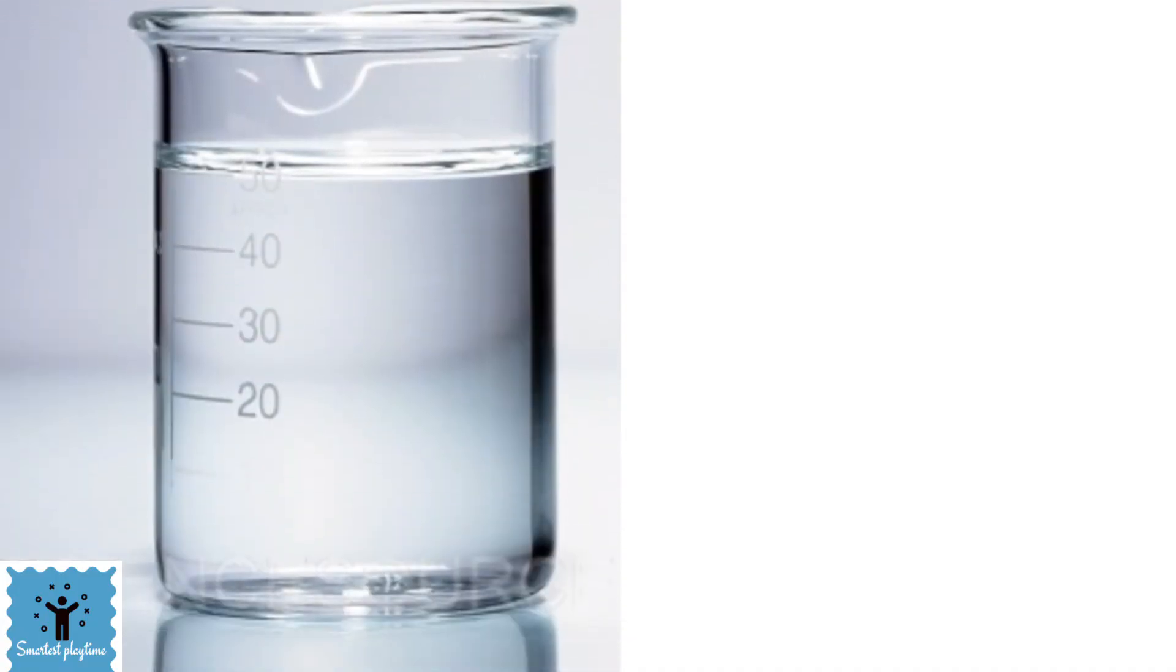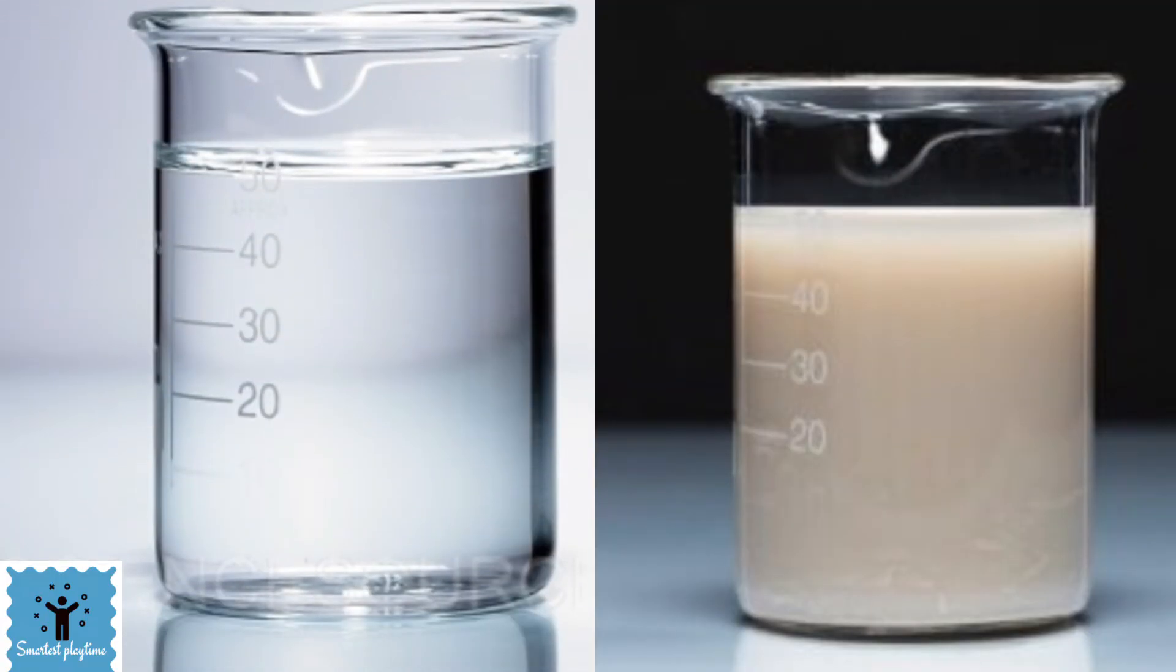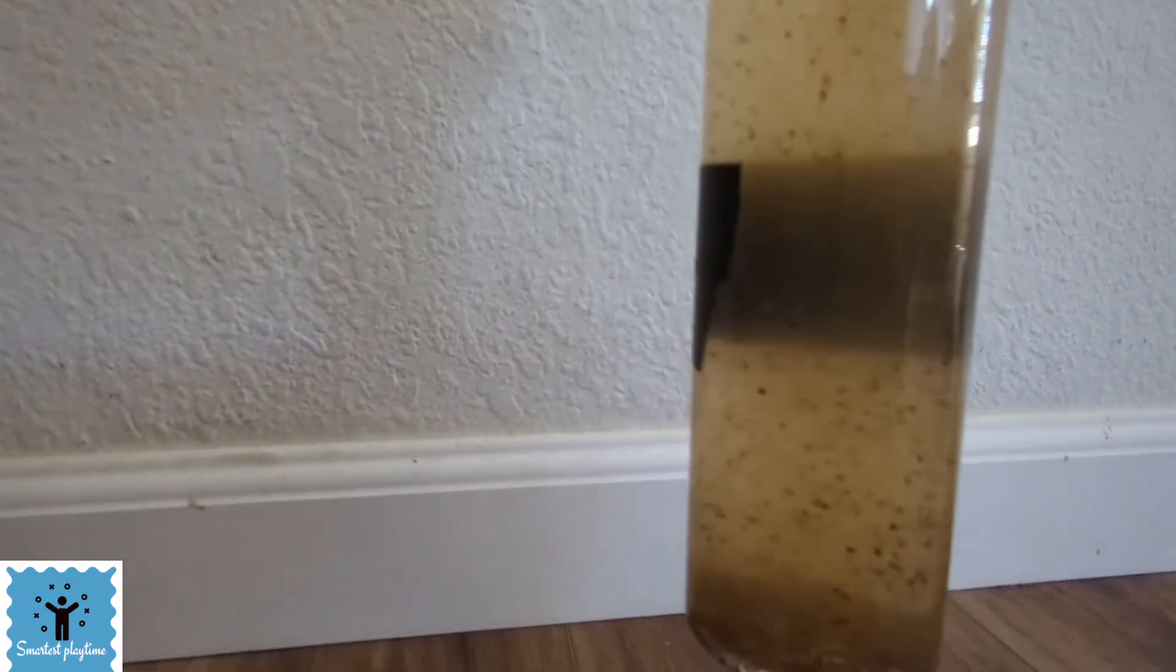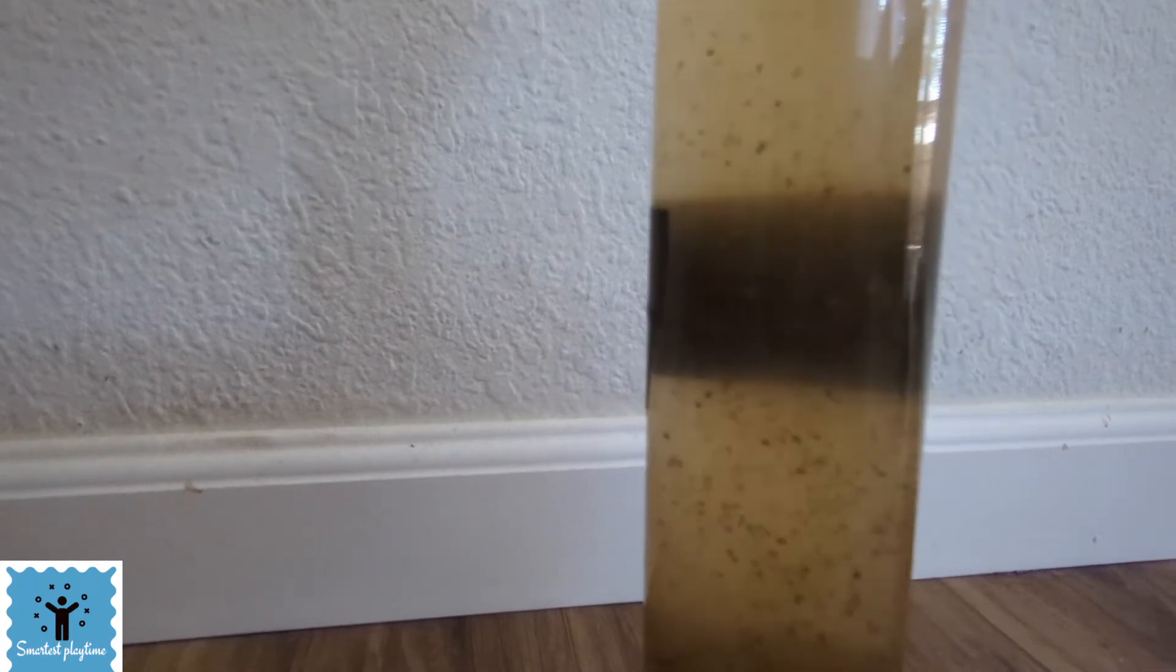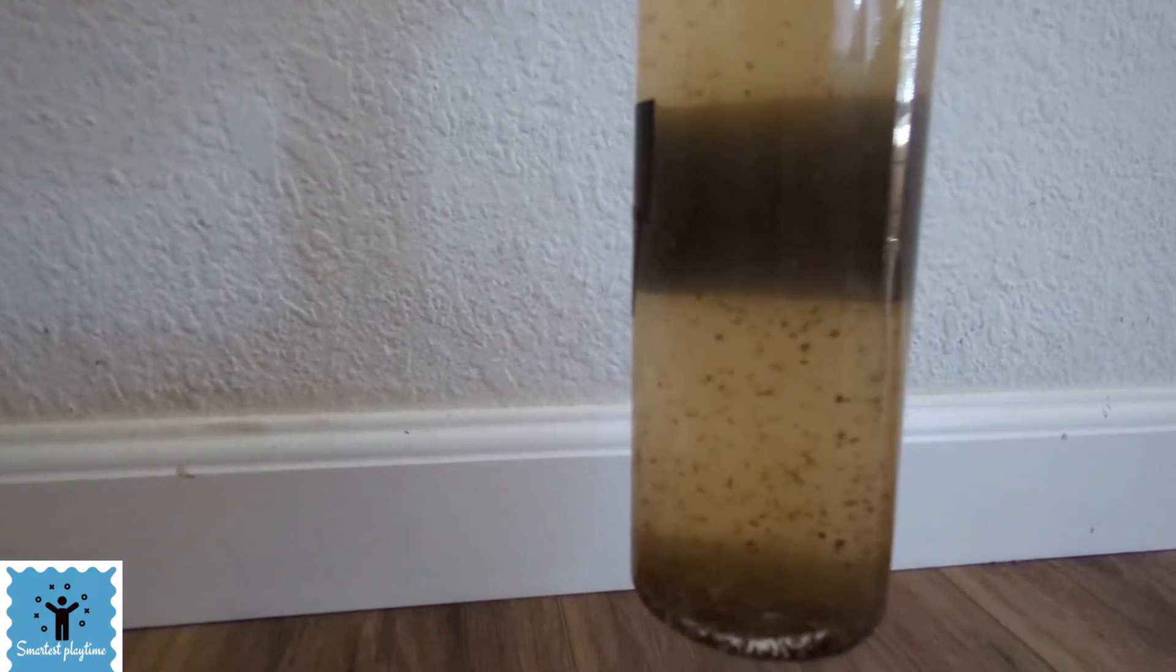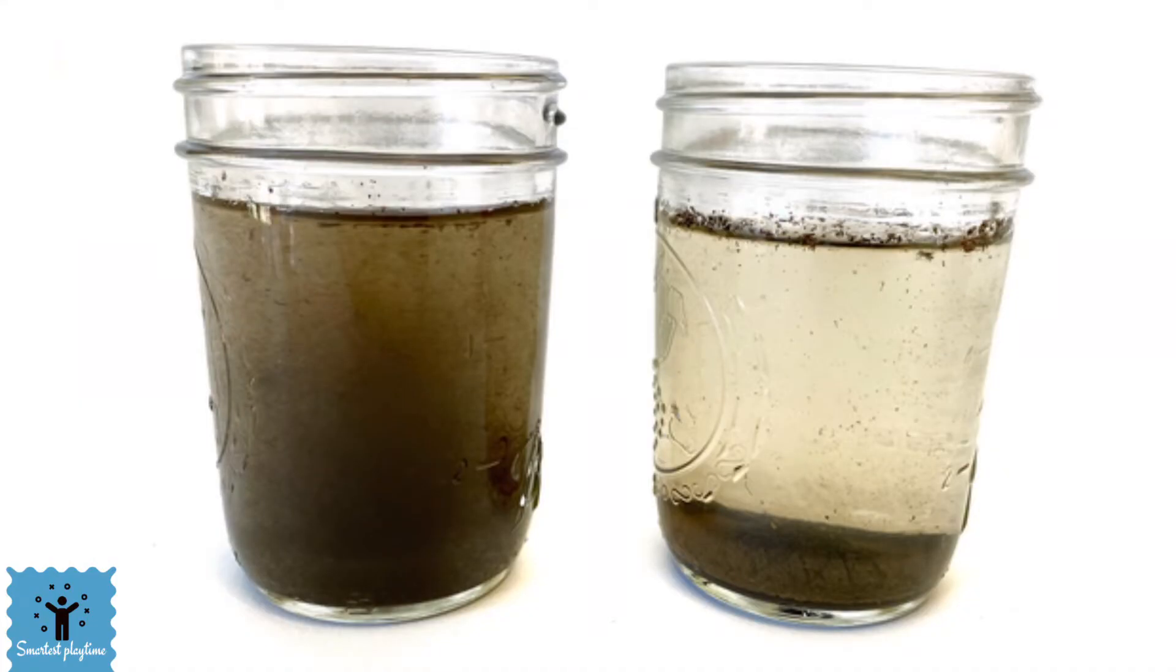You can see through a solution, but a suspension will look hazy because of the stuff floating in it. For example, dissolve some cornstarch or pepper in water. You will see after some time the stuff will settle or sink to the bottom if you let it sit for a long time.